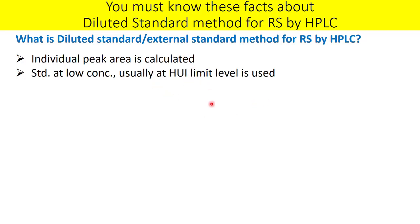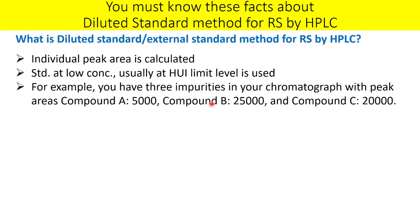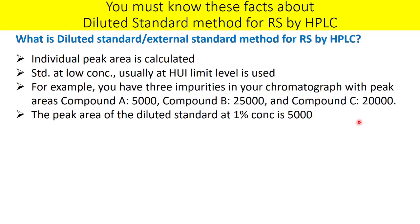HUI stands for highest unknown impurity. For example, you have three impurities in your chromatograph: compound A with a peak area of 5,000, compound B with 25,000, and compound C with 20,000. The peak area of the diluted standard at 1% concentration is 5,000. So the diluted standard concentration is 1% and its response is 5,000 area units.